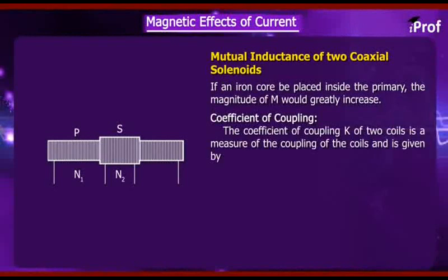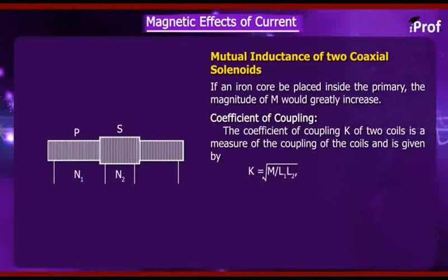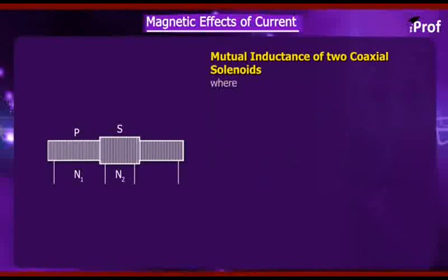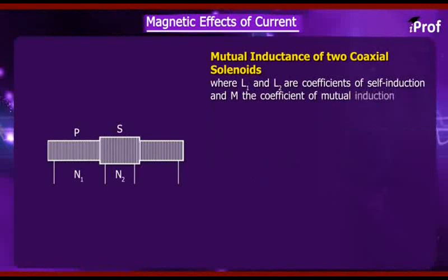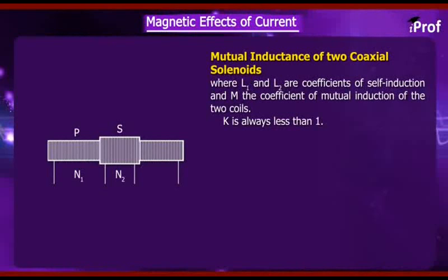Coefficient of coupling: The coefficient of coupling K of two coils is a measure of the coupling between the coils and is given by K = √(M / (L1·L2)), where L1 and L2 are the coefficients of self-induction and M is the coefficient of mutual induction of the two coils. K is always less than 1.